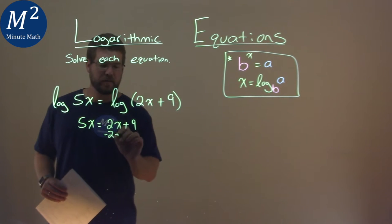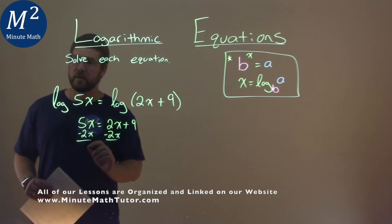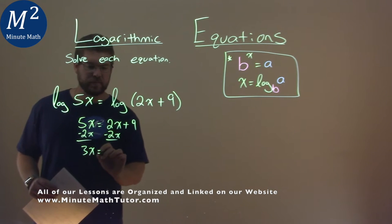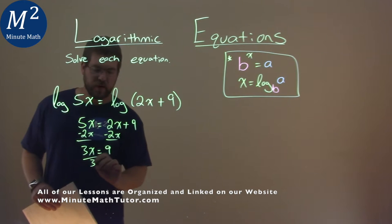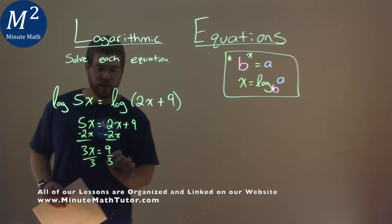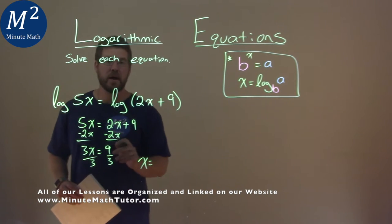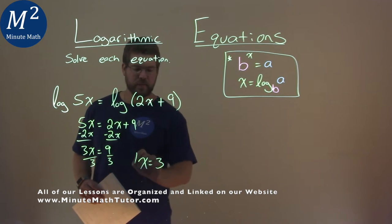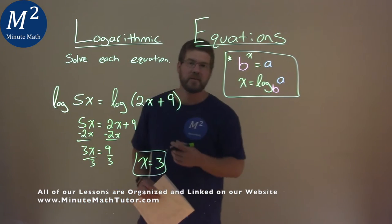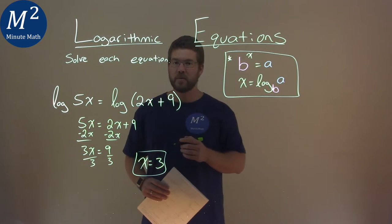I subtract 2x from both sides. 5x minus 2x is 3x, and that's equal to positive 9. Divide both sides by 3, and we have x equals 9 over 3, which is 3. My final answer is x equals 3.